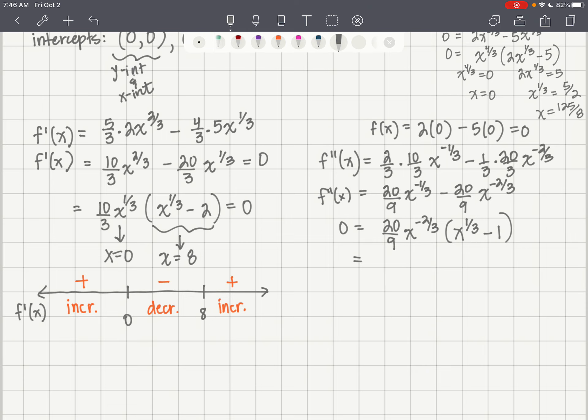I can factor, set it equal to 0 and factor 20/9 x to the negative 2/3. It's going to leave us x to the 1/3 minus 1. So once again, when we solve using our zero product property, this provides us x equals 0, and this is x equals 1.